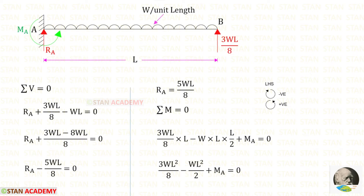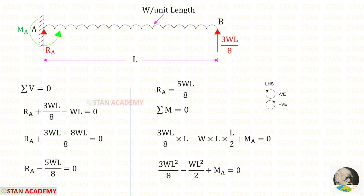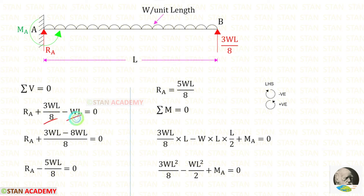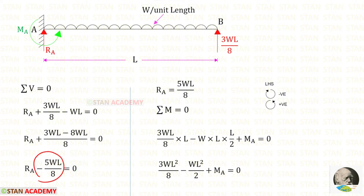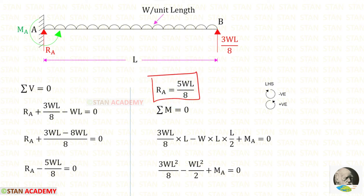Now let us apply ΣV = 0 to find RA. RA and RB are acting upwards, so both are positive. The UDL is acting downwards, so it will be negative. For the UDL we multiply by the distance L, giving WL. Taking LCM as 8: 8 × WL gives 8WL. Then 3WL minus 8WL gives minus 5WL. Taking this term to the other side, it becomes positive. So for RA we have got 5WL upon 8.